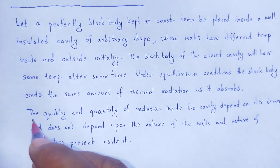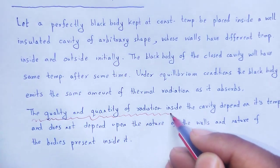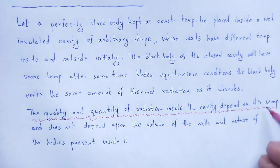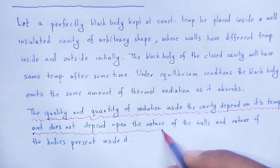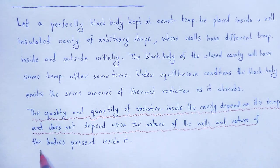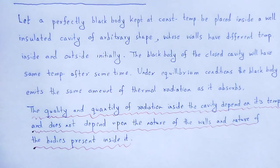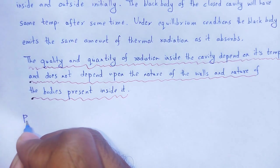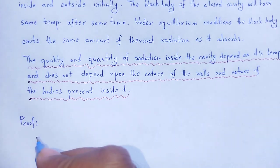We can prove how blackbody radiation is purely dependent upon temperature. The quality and quantity of radiation inside that cavity depend only on its temperature and do not depend on the nature of the walls and nature of the bodies present inside it. We can prove it.